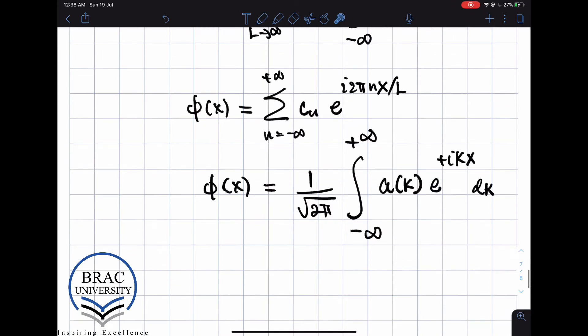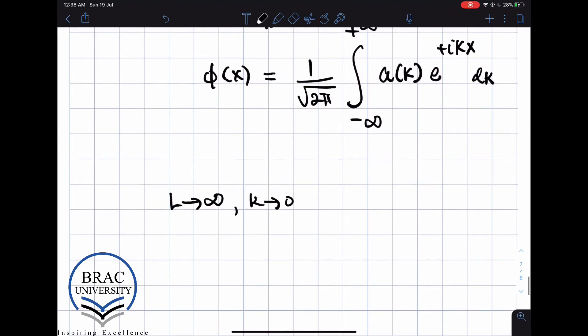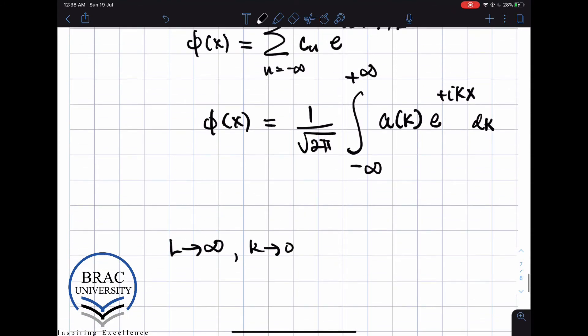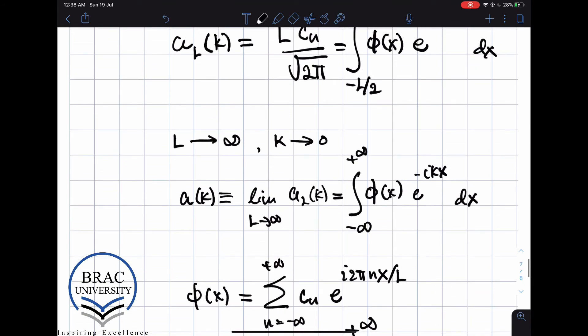So let's summarize. So what we have done is that we have taken the limit of the Fourier series, where L went to infinity, the periodicity went to infinity, and k went to 0. And in that limit, we get these expressions for φ and a.